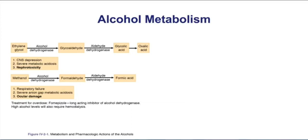Formaldehyde can damage the eyes — vision damage and blurry vision can result from methanol poisoning. Formaldehyde is further metabolized into formic acid. It's important to know these pathways because these could be clues in a question as to what type of alcohol the person was drinking.